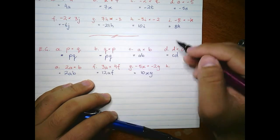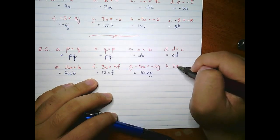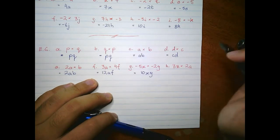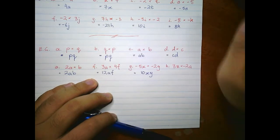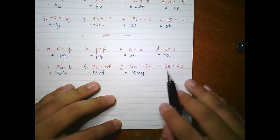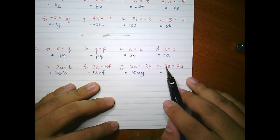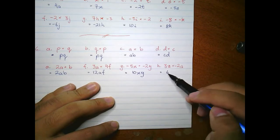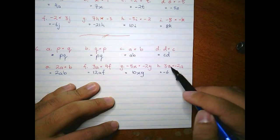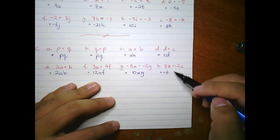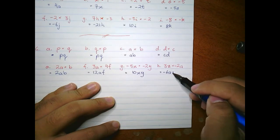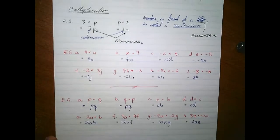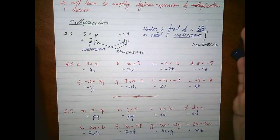One last example: if we had 3z times negative 2a — three times two is six, but a positive times a negative is a negative — and alphabetically we put a before z, giving us negative 6az. This concludes the section on multiplication in algebra — terms just merge together.